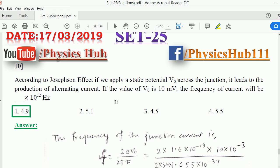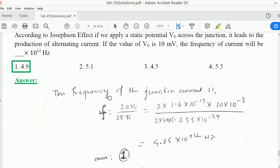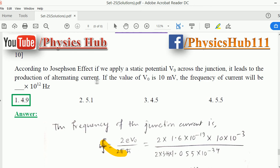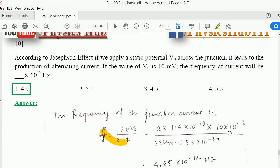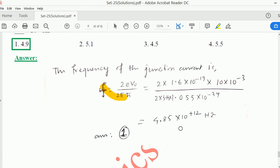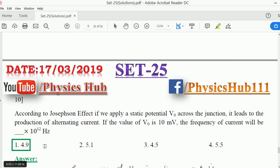Question number 10. According to the Josephson effect, if we apply a static potential V naught across the junction, it leads to production of alternating current. If the value of V naught is 10 millivolts, the frequency of current will be: The frequency is f equals 2eV naught over 2 pi h-bar. Omega equals 2 pi f equals 2eV naught over h-bar. We have to find frequency, not angular frequency, so divide by 2 pi. Replacing V naught by 10 millivolts and h-bar 1.055 times 10 to the minus 34 joule seconds, we get 4.85 times 10 to the 12 hertz, matching with option 1.